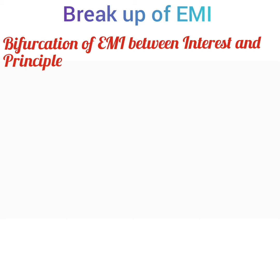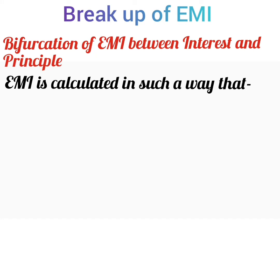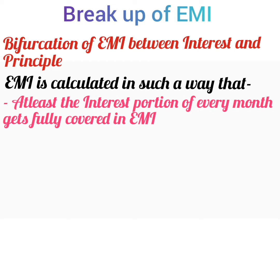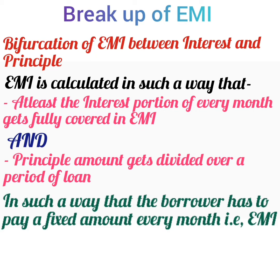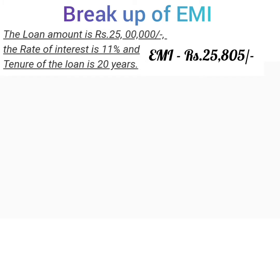Now that we know the EMI calculation, let's understand the bifurcation of EMI between interest and principal. The EMI formula calculates EMI such that at least the interest portion of every month gets covered fully, and the principal amount gets divided over the loan period so that the borrower pays a fixed amount every month — that is, the EMI. The bifurcation of EMI into interest and principal is called amortization. Let's go back to our example and understand the bifurcation.